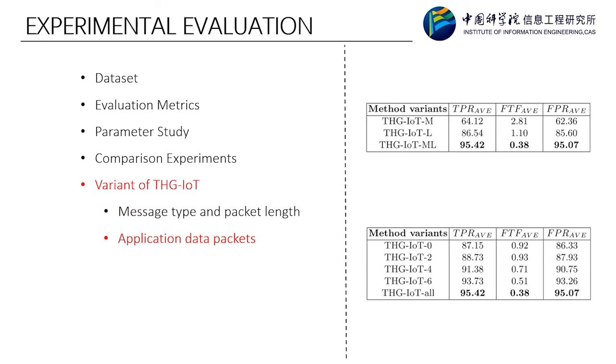The application data packets are also important. The application data packets have encrypted content information, which helps to increase the distinction between different classes of flows. We set up five variants corresponding to the number of application data packets used as 0, 2, 4, 6, and all. As the number of application data packets used increases, the performance of the IoT device identification gradually becomes more robust.